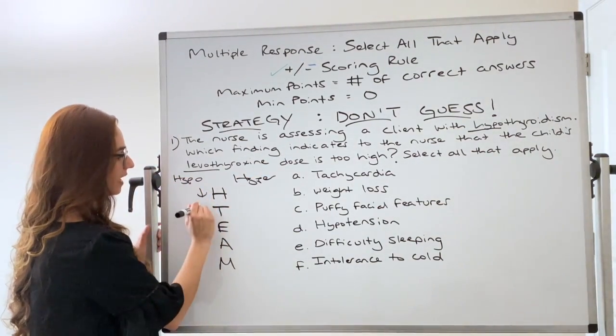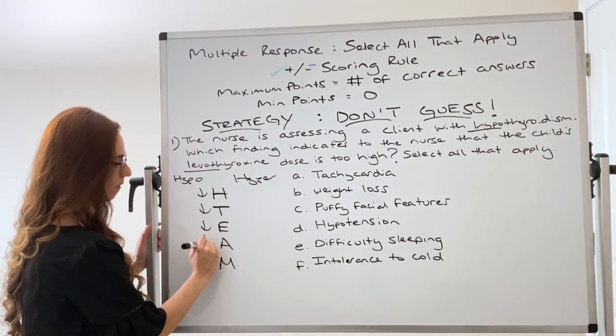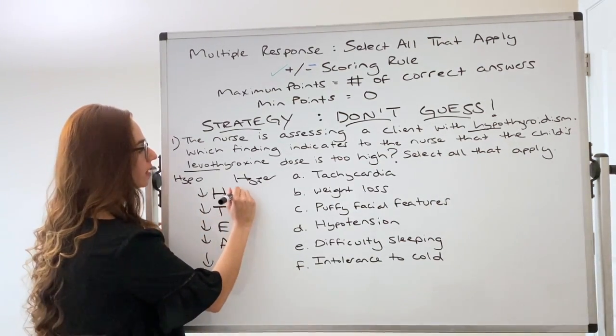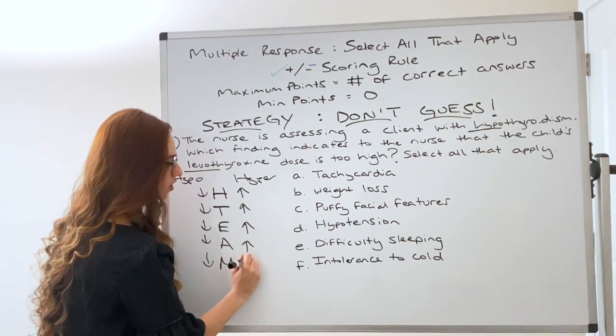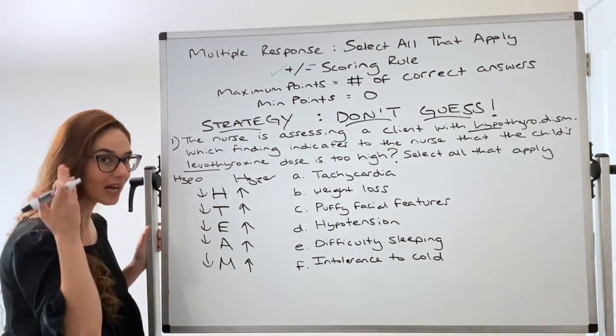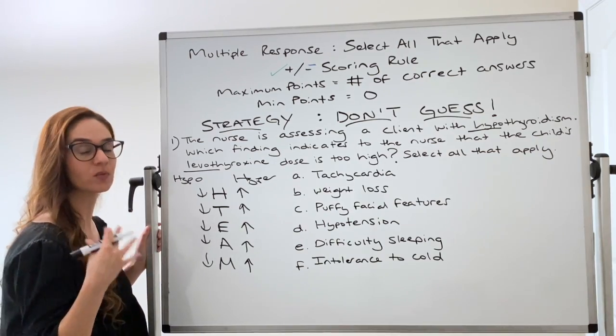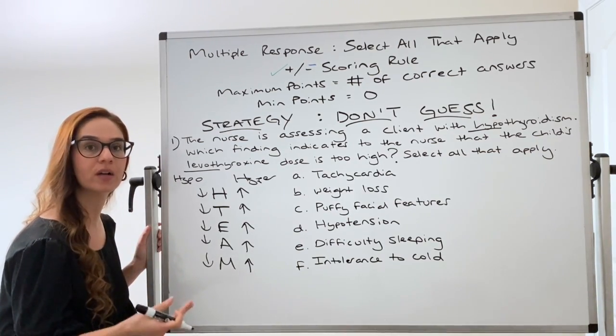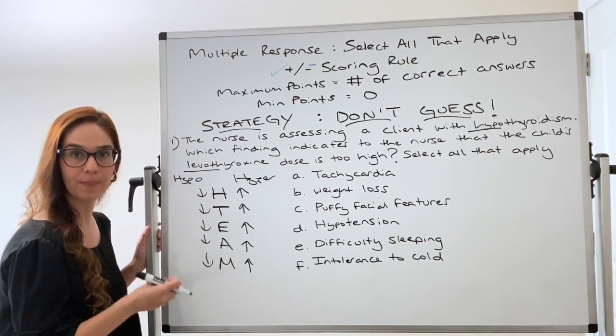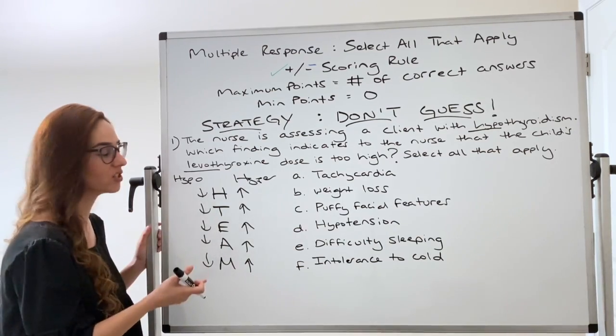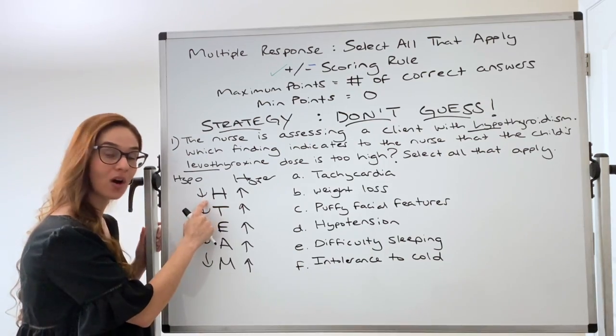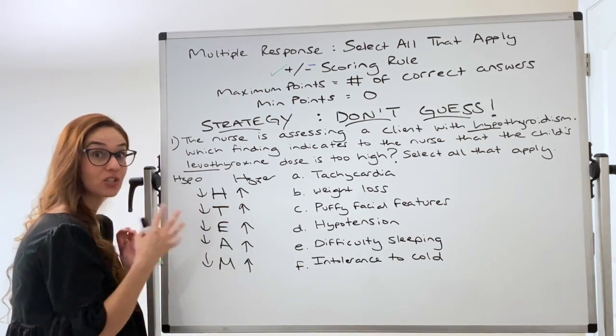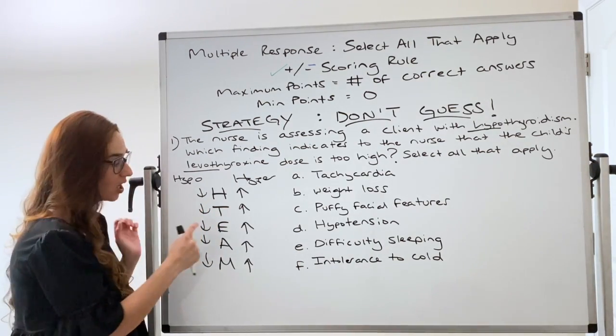So let's say hypo is on this side, hyper is on this side. So you put down arrows because that means low and for hyper it means high, so up arrows. So just a reminder, to do select all that apply questions you have to have the knowledge in the first place. That's why it's so important to read through some type of NCLEX prep content book. Have the knowledge in you.